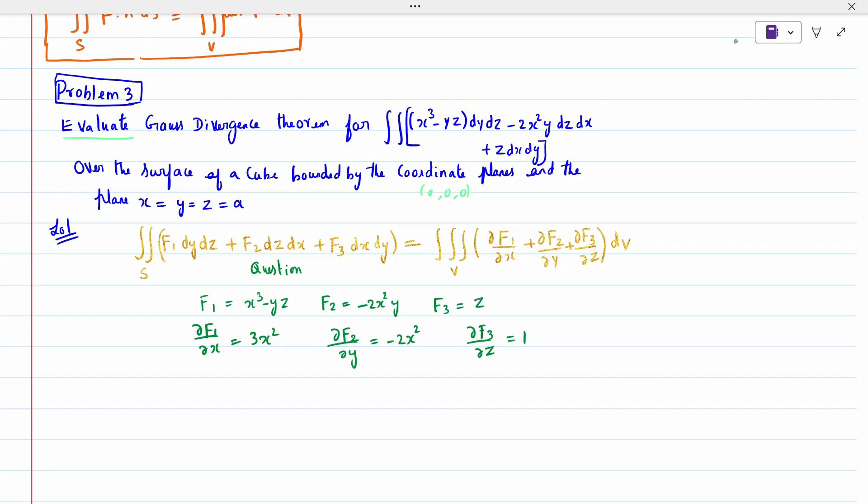Now add all three: ∂f1/∂x plus ∂f2/∂y plus ∂f3/∂z. Add everything: 3x² - 2x² + 1. When I add it, it is x² + 1. So now our question is x² + 1.